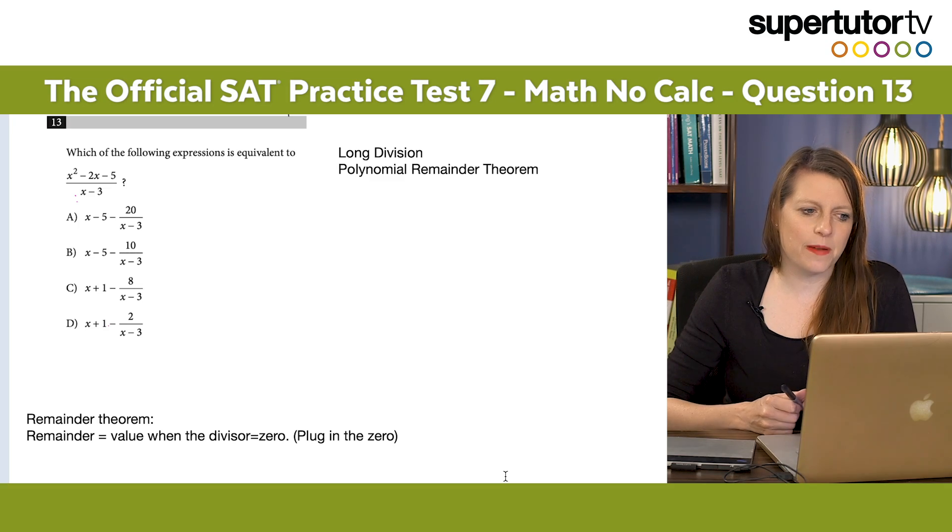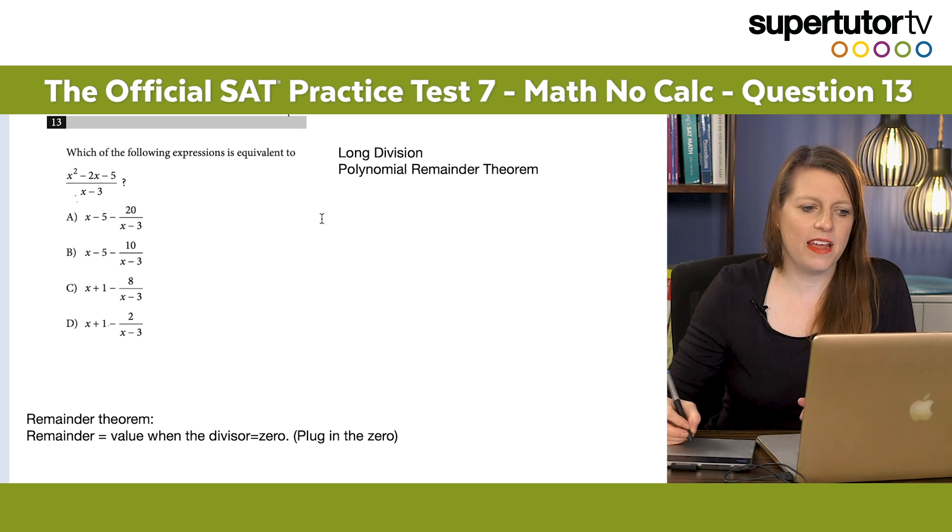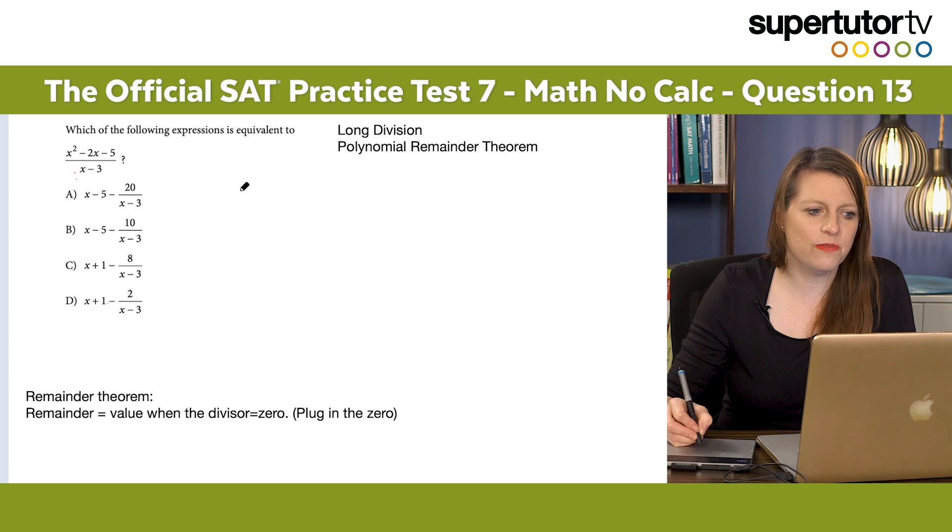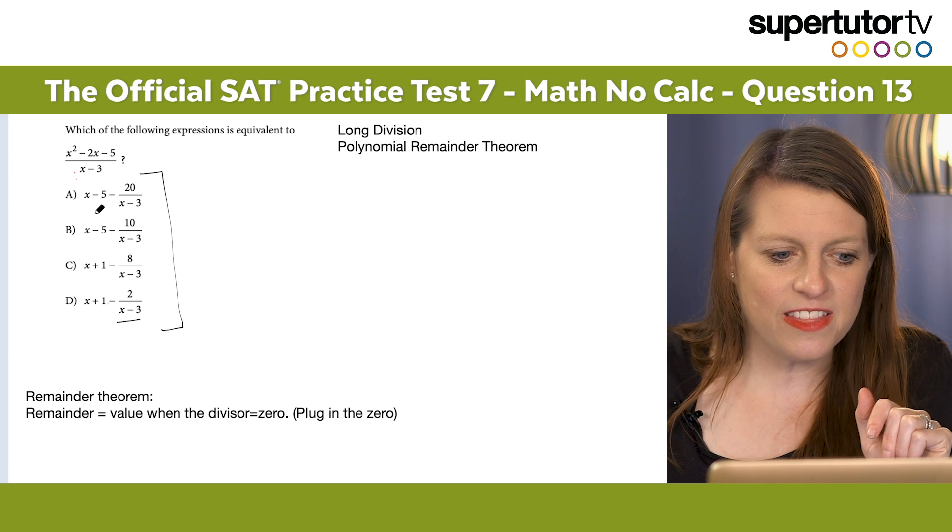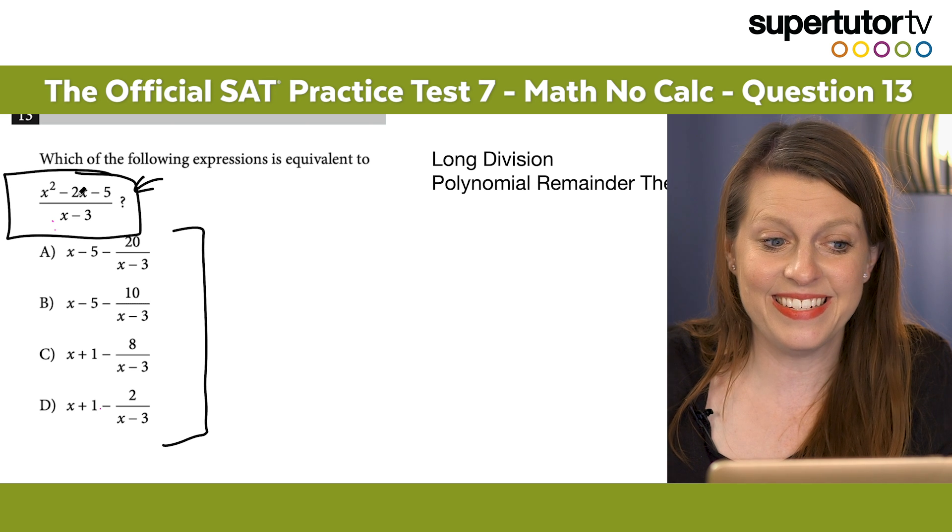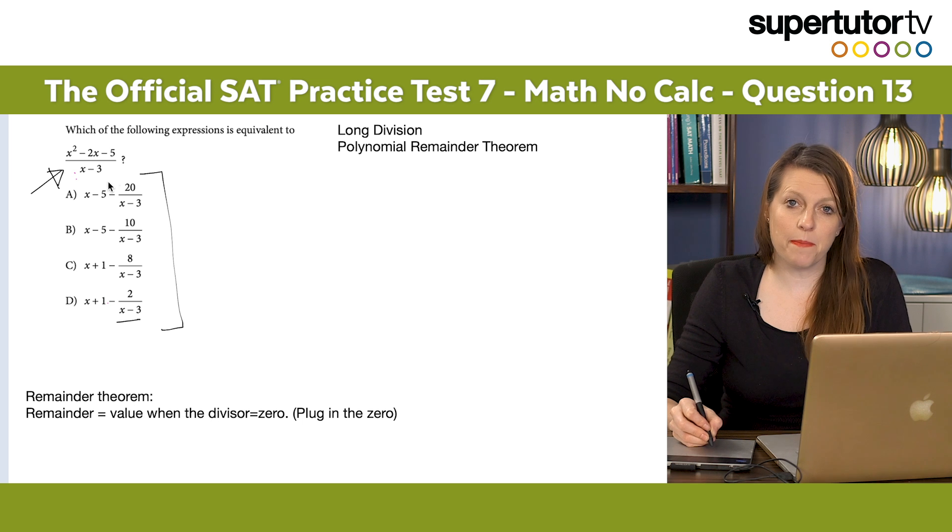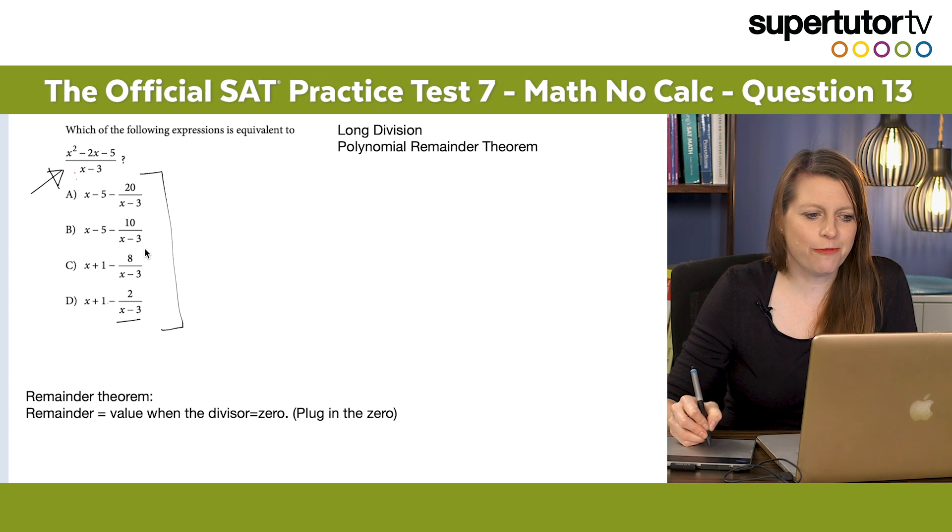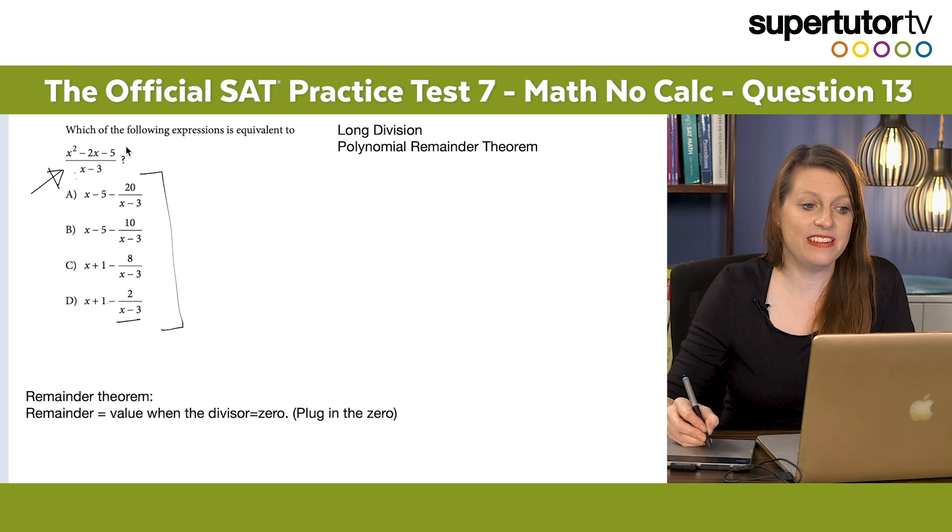The first question we're going to do today is from test number seven of the official College Board tests. So this is a polynomial division problem. I have some of my top students get stuck on these because they don't know how to approach it. They assume that it's going to be like, I factor this and then things cancel, which sometimes happens. But if you look down here, you see that there isn't anything else that's just x plus two. And that means that this is not divisible by this. So the divisor or this number on the bottom here, if you see that in a bunch of fractions in the answer choices, this is a long division question.